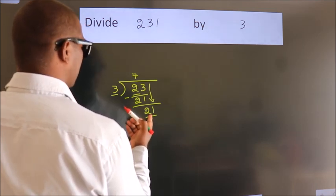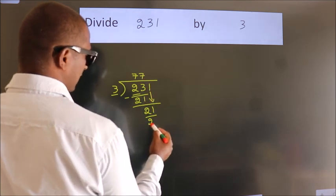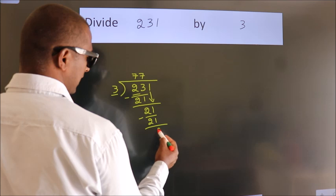When do we get 21 in 3 table? 3 7s, 21. Now we subtract. We get 0.